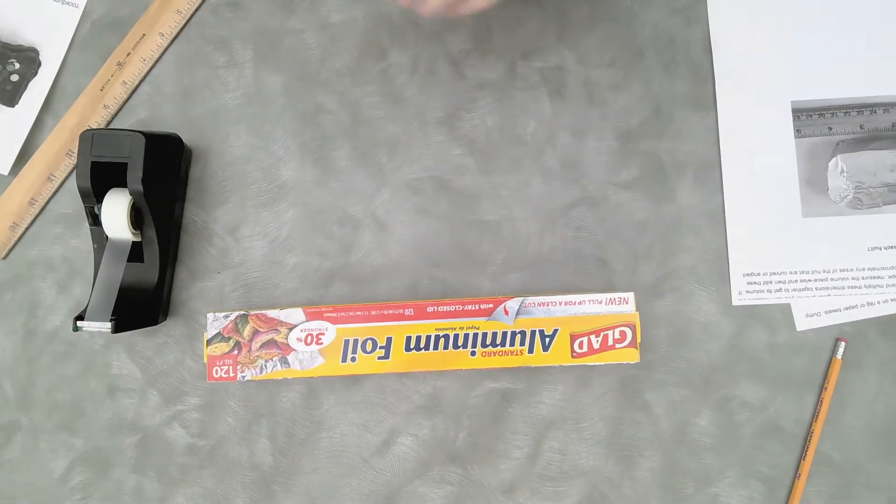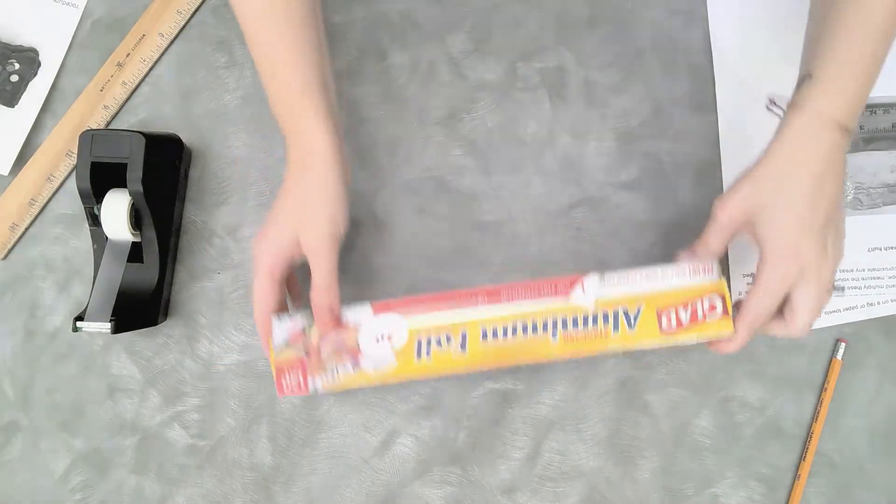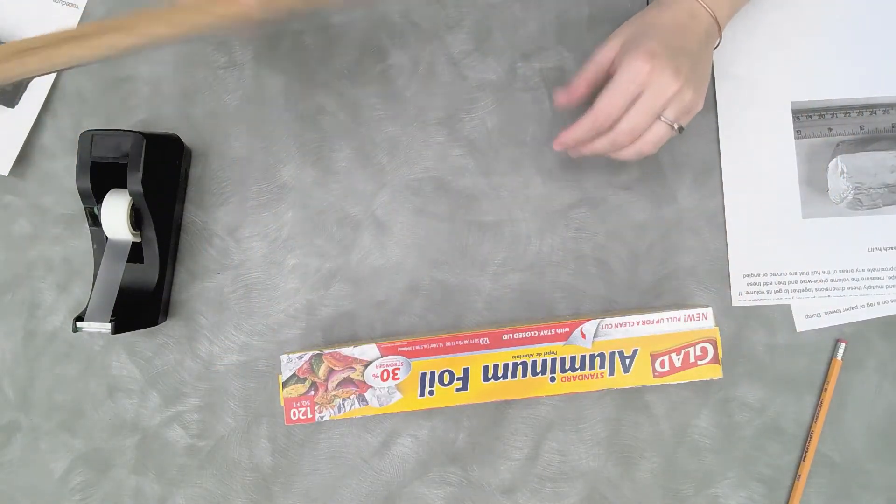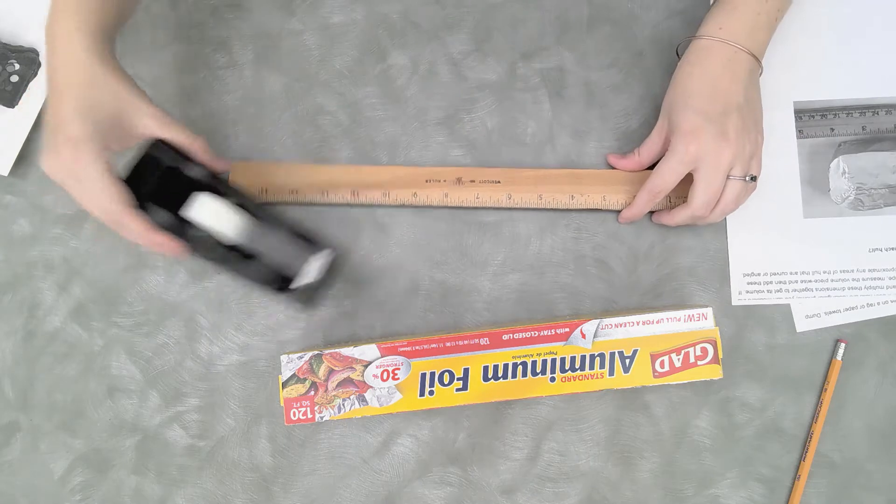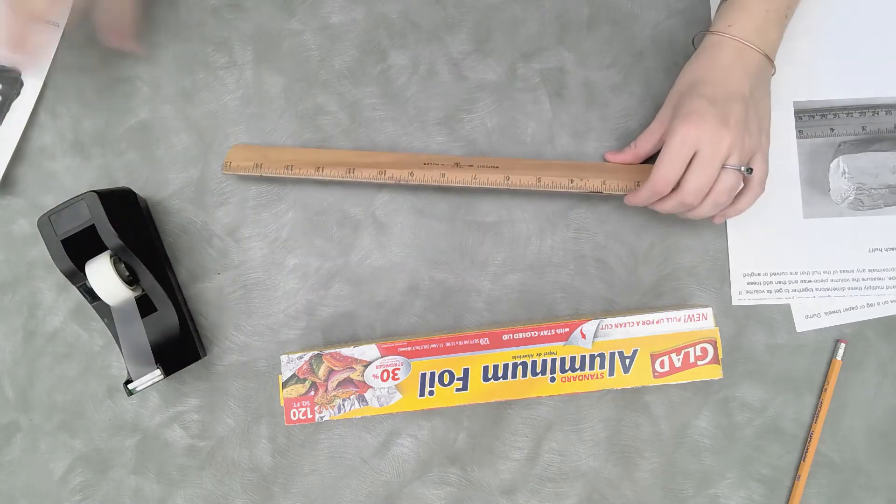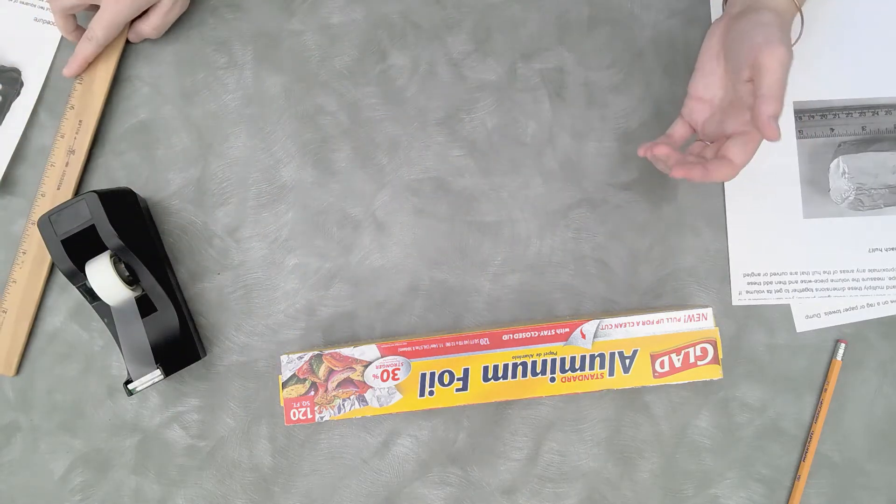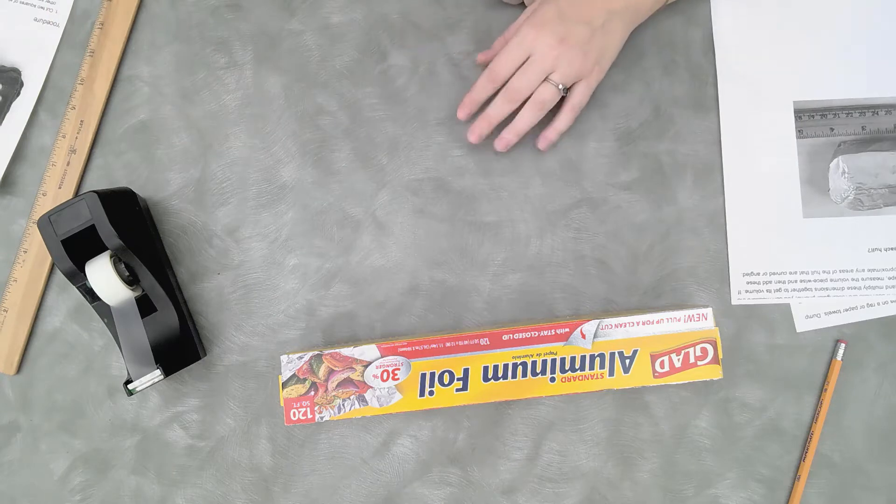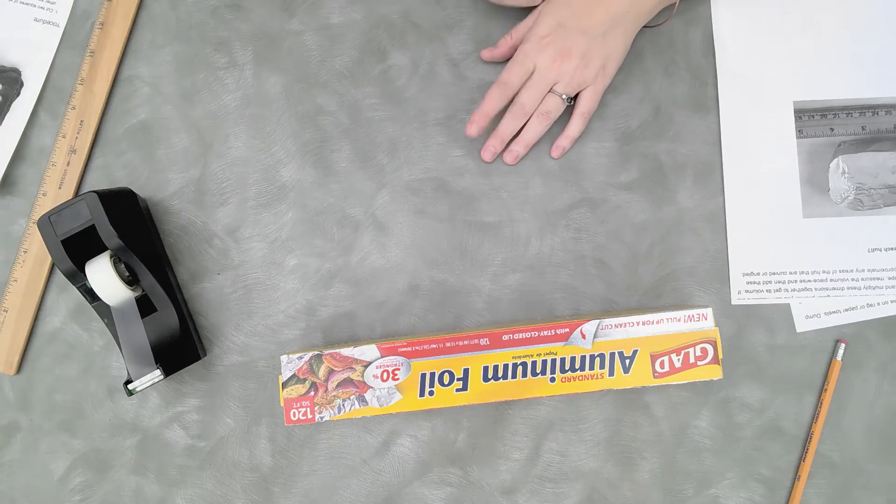We're going to use some aluminum foil, which you can pick up here at the library, and test our boats in the water to see how sturdy they are. So I'm going to turn the camera now. I have aluminum foil, a ruler, and some tape just in case I need it. You also might want some pens or paper, scrap paper just to make notes, but you don't have to.